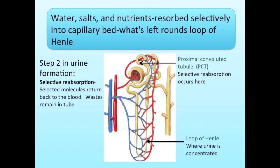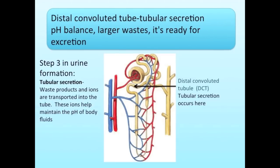Into the capillary bed — what's left rounds the loop of Henle. Distal convoluted tube: tubular secretion, pH balance, larger waste — it's ready for excretion.